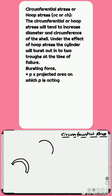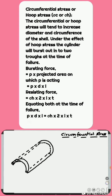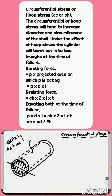The first type is circumferential stress or hoop stress, denoted as Sigma C or Sigma H respectively. The circumferential or hoop stress will tend to increase the diameter and circumference of the shell. Under the effect of hoop stress, the cylinder will burst into two troughs at the time of failure. Bursting will take place if the force due to fluid pressure is more than the resisting force due to intermolecular forces along the area of the critical section of failure, as shown in the figure. Bursting force equals pressure P into the projected area on which P is acting.